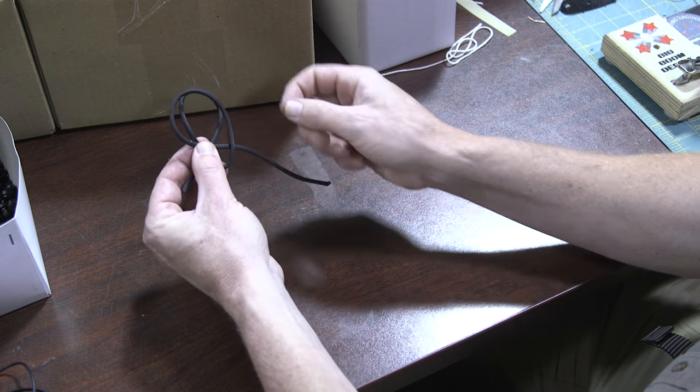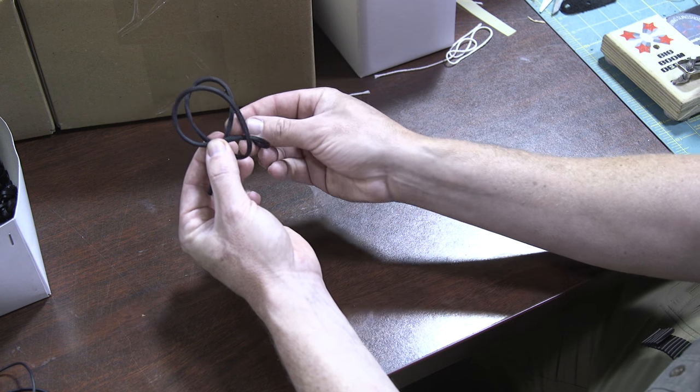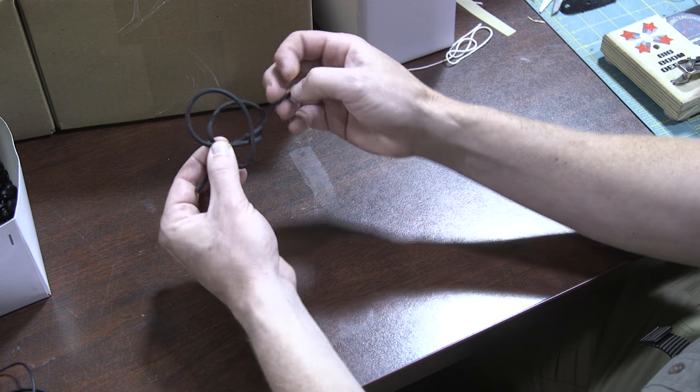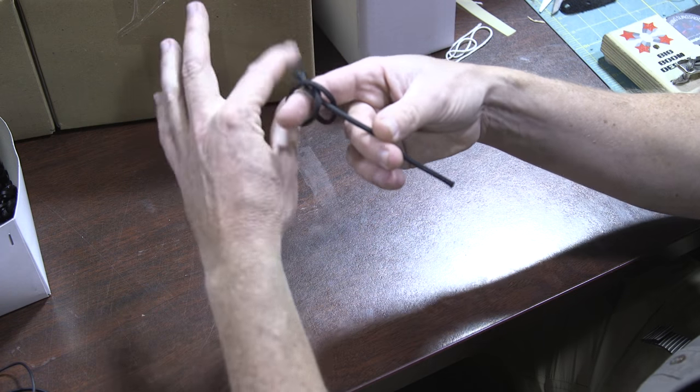Put the loops on top of one another, take the right hand tag end and loop it through the back loop, and your knot is complete.